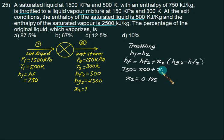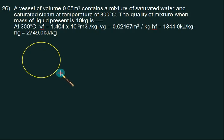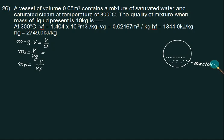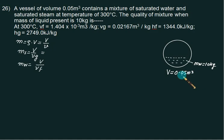Now consider a vessel problem. We use the relation: mass = density × volume = volume divided by specific volume. The vessel contains water equal to 10 kg, and the volume of the vessel is 0.05 cubic meters. The remaining space contains dry steam.